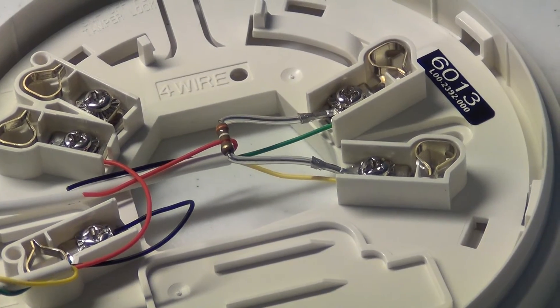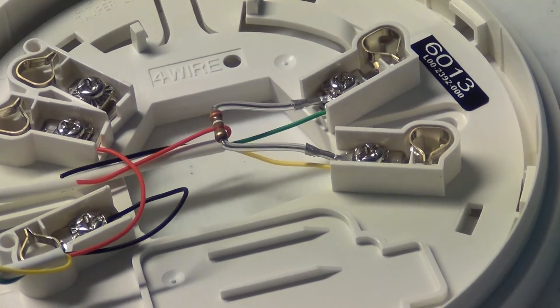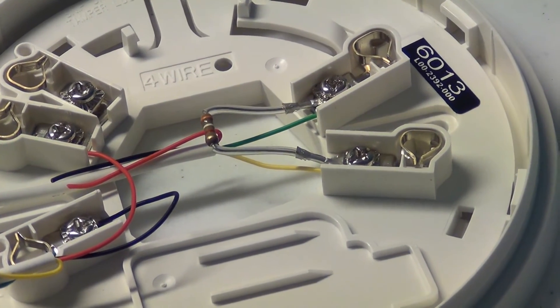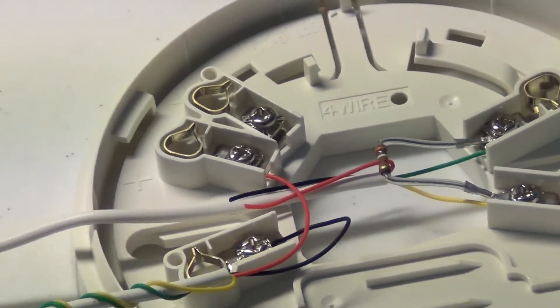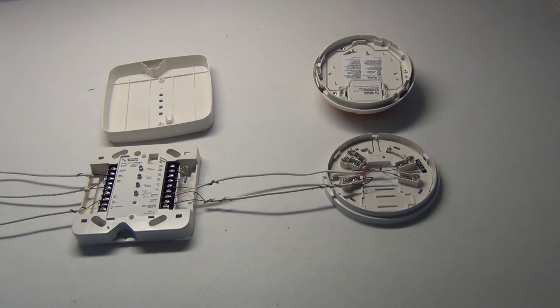At the very last one in the line you're going to use this resistor they provide with the module and you'll run it in parallel between the two terminals. You can only fit 12 smoke CO combos per one module.